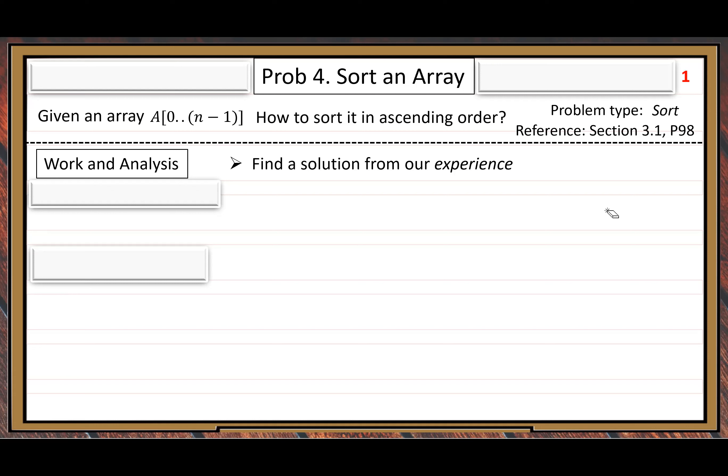We try to connect our current problem — the sorting problem — to our experience. Here the experience I refer to is our module two experience, the most direct experience. Since we just got started in module two, the only experience related to this class is module one. So we want to connect to module one content. Then we explore properties — in order to make the connection, we need to explore properties. These two items are our guidelines when we get started.